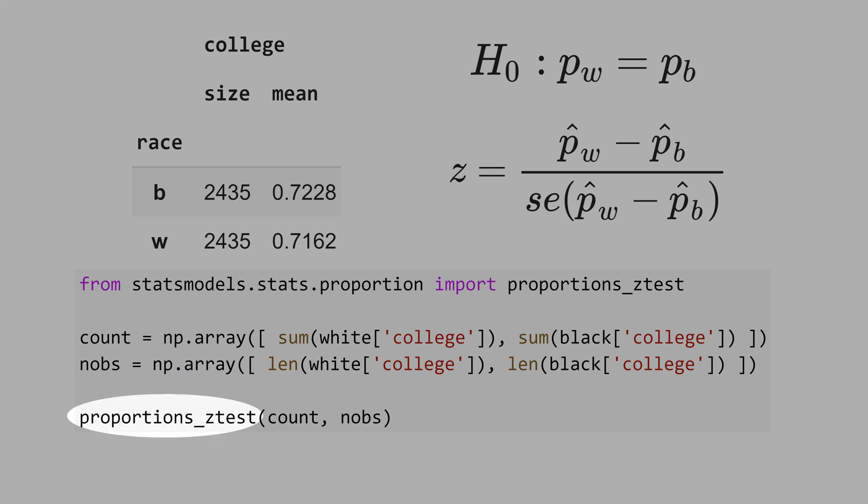See that to do the proportion z-test, we do not pass the mean, but we pass the necessary information for the computer to calculate the mean. And the result is a z-statistic that is equal to minus 0.53.